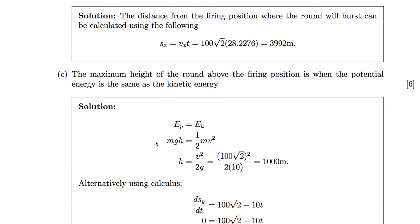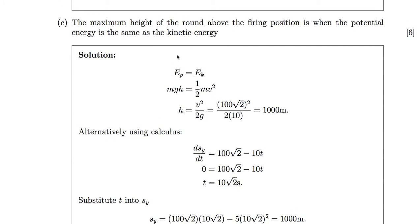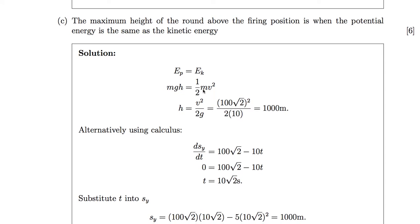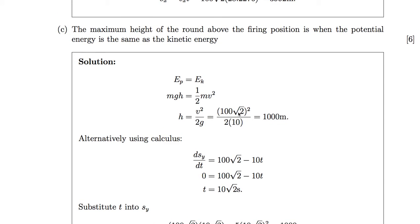Next: calculate the maximum height of the round above the firing position. This is where potential energy equals kinetic energy. Potential energy is m·g·h and kinetic energy is ½·m·v². We don't need to know the mass because dividing through by m gives h = v² / (2g). With Vy = 100√2, that's (100√2)² divided by 2 times 10, which simply gives us 1,000 metres. That's the maximum height.